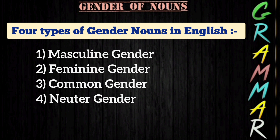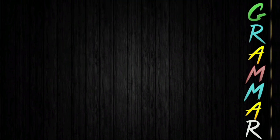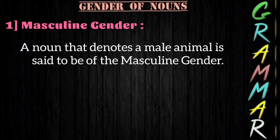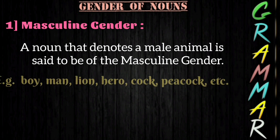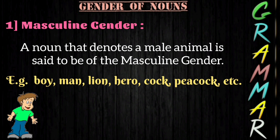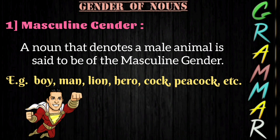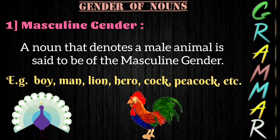The first one is masculine gender. A noun that denotes a male animal is said to be of the masculine gender. For example: boy, man, lion, hero, cock, peacock, etc.